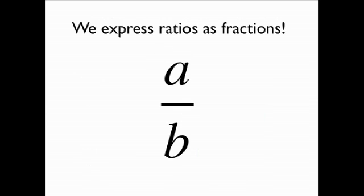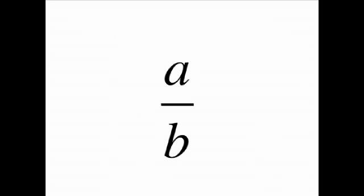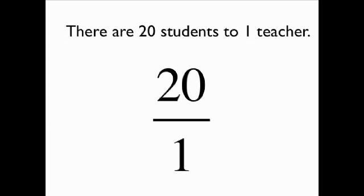We express ratios as fractions. A to B becomes A over B. This is very helpful in performing calculations. The 20 students to one teacher becomes 20 divided by 1 as a fraction, where 20 is the numerator and 1 is the denominator.